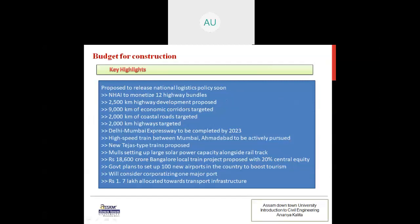For the current budget for construction, key highlights include: a proposed National Logistics Policy, NHAI to monetize 12 highway bundles, 2,500 km of highway development proposed, 9,000 km of economic corridors targeted, 2,000 km of coastal roads targeted, 2,000 km of highways targeted, and the Delhi–Mumbai Expressway to be completed by 2023. A high-speed train between Mumbai and Ahmedabad is to be actively pursued.